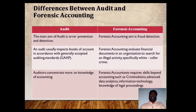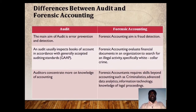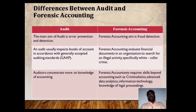The main aim of audit is error prevention and detection, whereas the aim of forensic accounting is fraud detection. An auditor usually inspects books of accounts in accordance with generally accepted accounting practices, whereas forensic accounting evaluates financial documents in an organization to search for illegal activity, specifically white collar crimes. Auditors focus more on knowledge of accounting, whereas forensic accountants require skills beyond accounting such as criminalistics, advanced data analysis, information technology, and knowledge of legal proceedings.